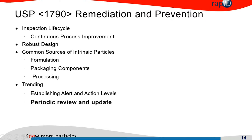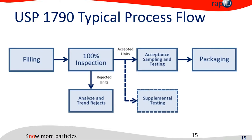Common sources of intrinsic particles include the formulation and packaging components. The long-term goal is to establish alert and action levels, which you can only do properly with periodic review and update. The typical process flow for the 1790 is that after filling you do 100% inspection, and what we are talking about today — analyzing and trending rejects — happens after that 100% inspection step.